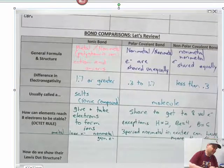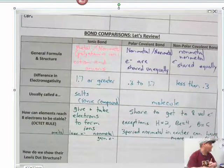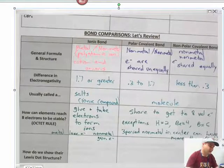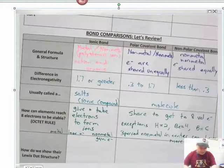Those are the expanded octets I'm talking about there for, like, phosphorus, sulfur if it's in the center, bromine if it's in the center, they can expand the octets there.